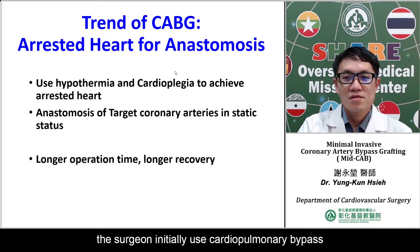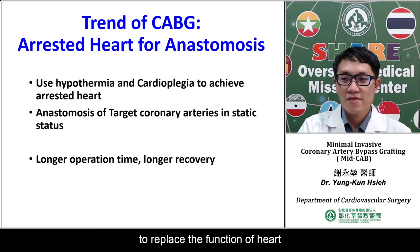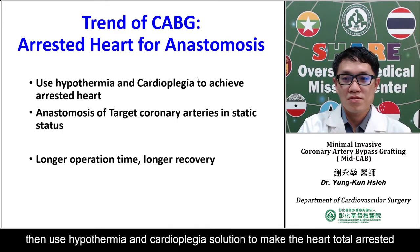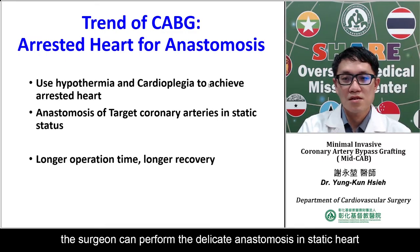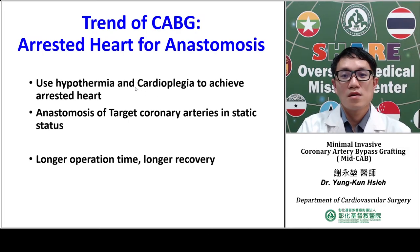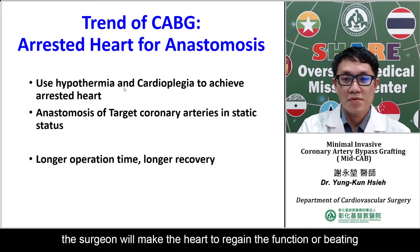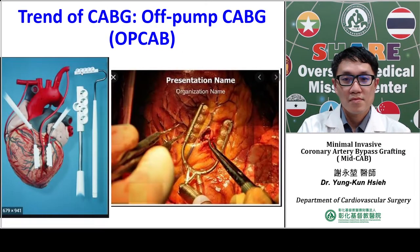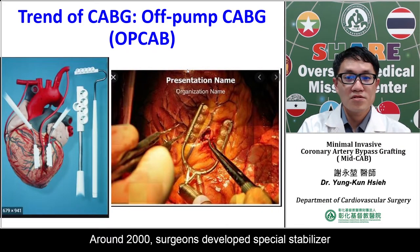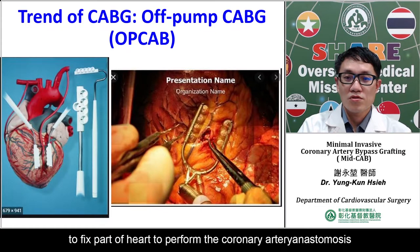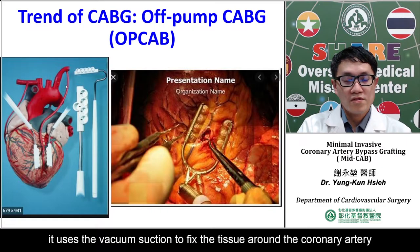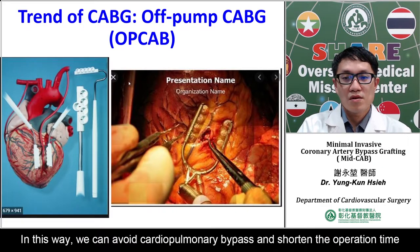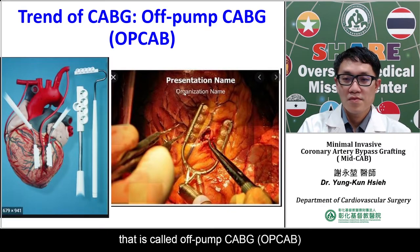To tackle the heart-beating problem, surgeons initially used cardiopulmonary bypass to replace the function of the heart, then used hypothermia or cardioplegia solution to make the heart totally rest. After the heart stops beating, the surgeon can perform a delicate anastomosis on the arrested heart. After completion of the anastomosis, the surgeon makes the heart regain its function. However, this takes more time. Around 2000, surgeons developed a special stabilizer to fix part of the heart to perform the coronary artery anastomosis. This stabilizer uses vacuum suction to fix the tissue around the coronary artery. In this way, we can avoid cardiopulmonary bypass and shorten the operation time to decrease blood transfusion. This is called off-pump CABG, or OPCAB.